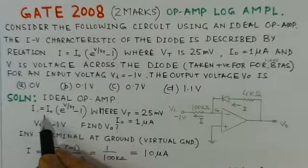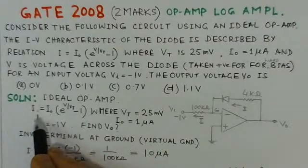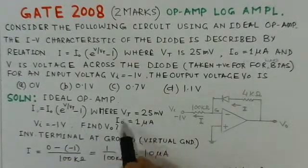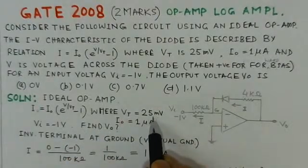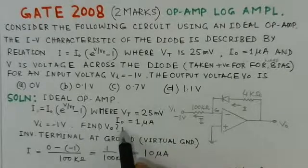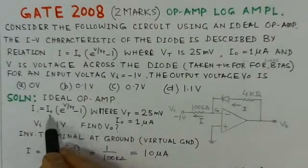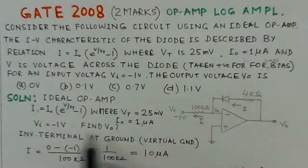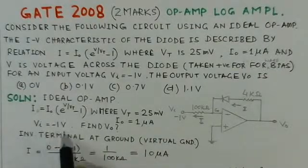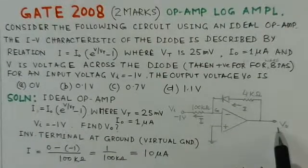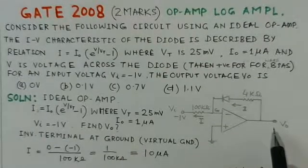The diode current is described by I equals I-naught times e to the power V over Vt minus 1, where Vt is 25 millivolts (the thermal voltage at room temperature), I-naught is 1 micro ampere, and Vi is minus 1 volt. We need to find the output voltage.